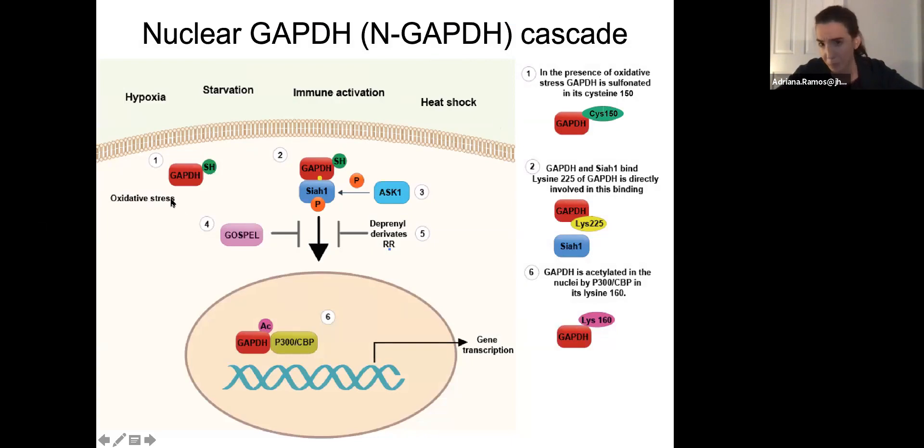Many people know that GAPDH is one of the main enzymes involving glycolysis, but what many people don't know is that this enzyme is able to get post-translationally modified when they encounter oxidative or nitrosative stress. When this happens, GAPDH binds to Siah1. This binding is important because Siah1 is the protein that moves GAPDH to the nucleus.